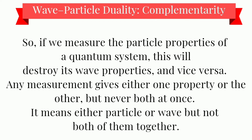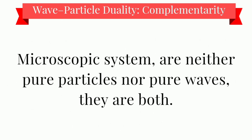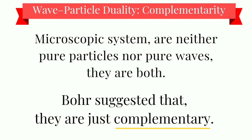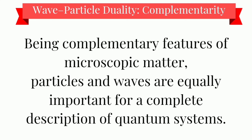If we measure the particle properties of a quantum system, this will destroy its wave properties and vice versa. Any measurement gives either one property or the other, but never both at once — either particle or wave, but not both of them together. Microscopic systems, therefore, are neither pure particle nor pure wave; they are both. Bohr suggested that they are just complementary. Both concepts are complementary in describing the true nature of the microscopic system. Being complementary features of microscopic matter, particles and waves are equally important for the complete description of a quantum system. From here comes the essence of the complementarity principle.